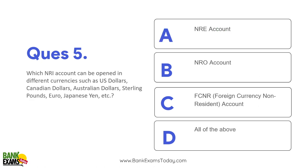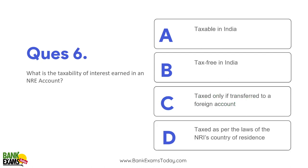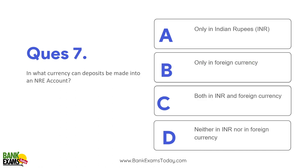Question 4: Which account can be opened in different currencies such as US dollars, Canadian dollars, Australian dollars, sterling pounds, euros, Japanese yen, Swiss francs? Answer: FCNR account. Question 5: What is the tax liability of interest earned in an NRE account? It is tax free. Even FCNR accounts are tax free. Question 6: In what currency can deposits be made in an NRE account? Only in foreign currency — because the money is earned outside India, for example in US dollars, then deposited and converted to Indian rupees.